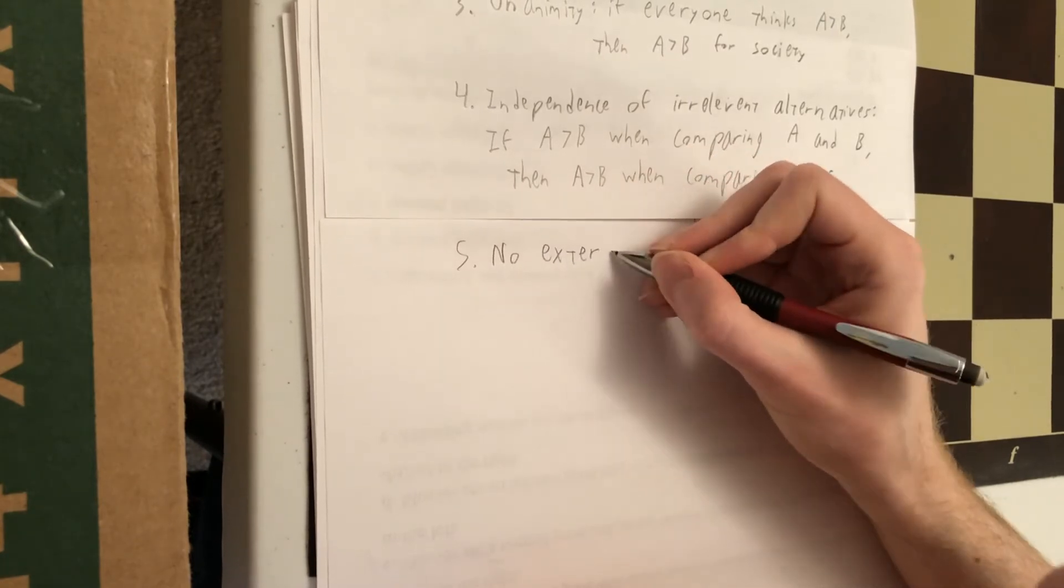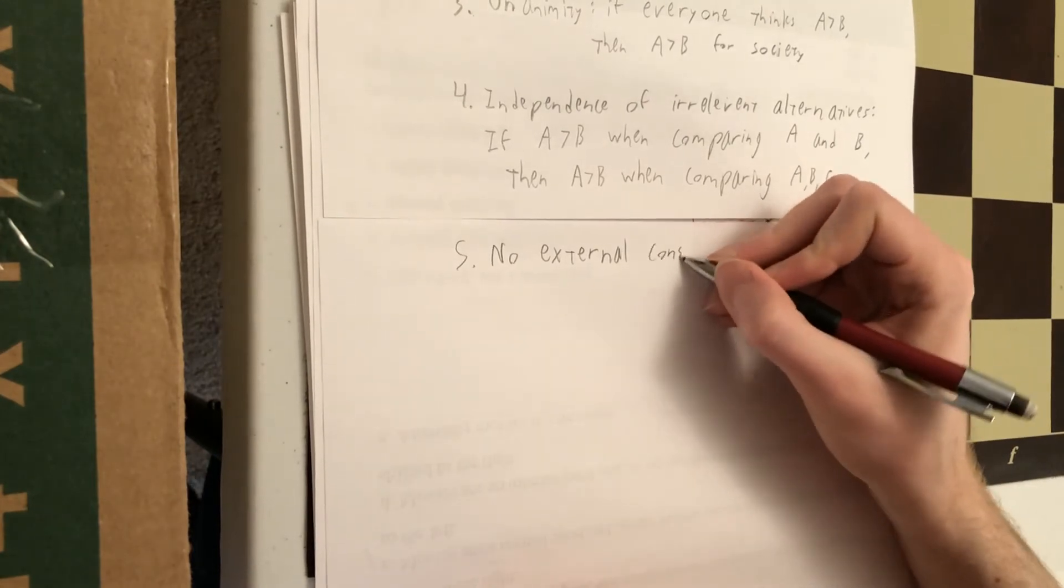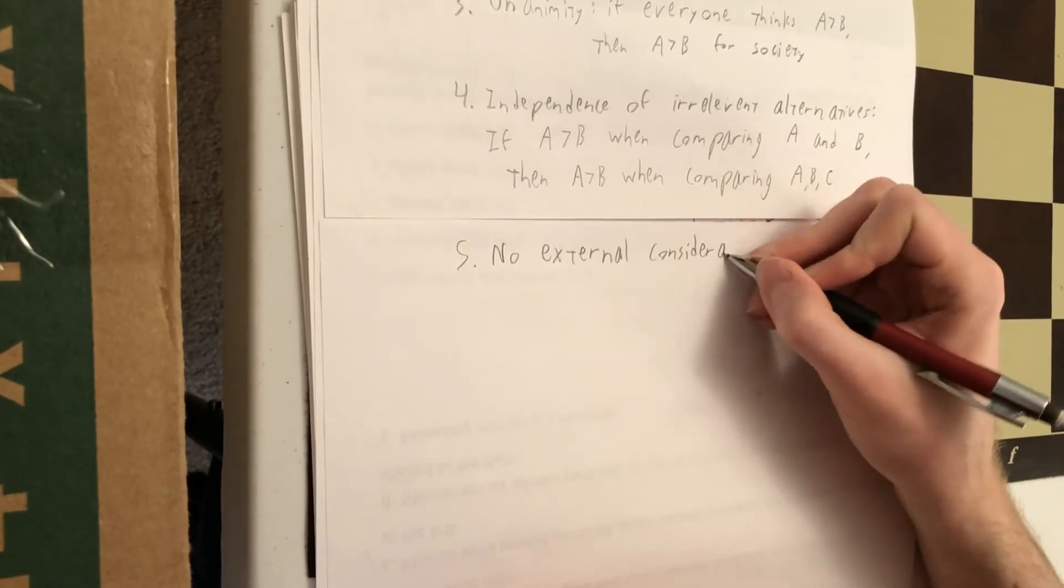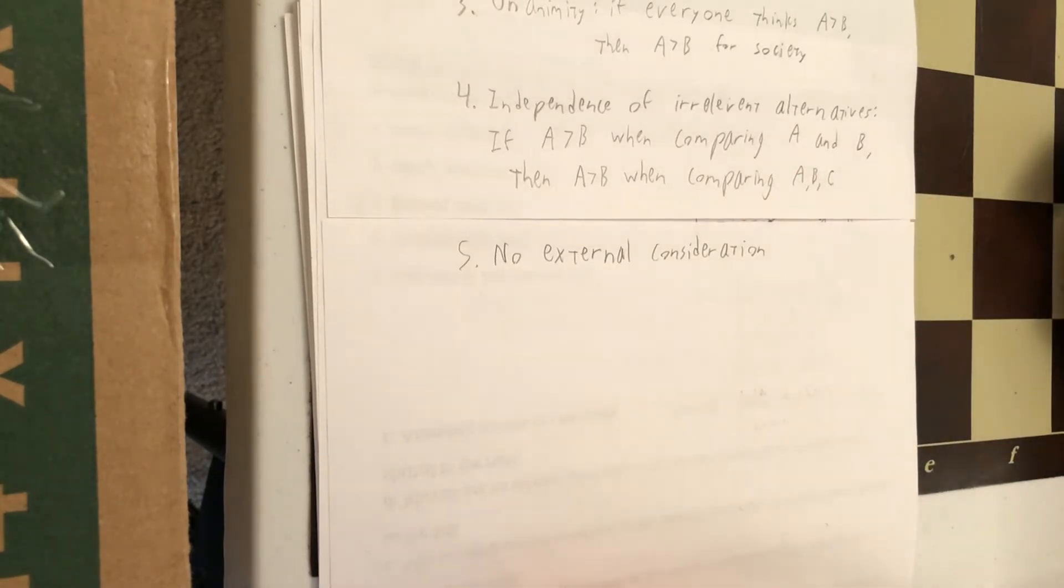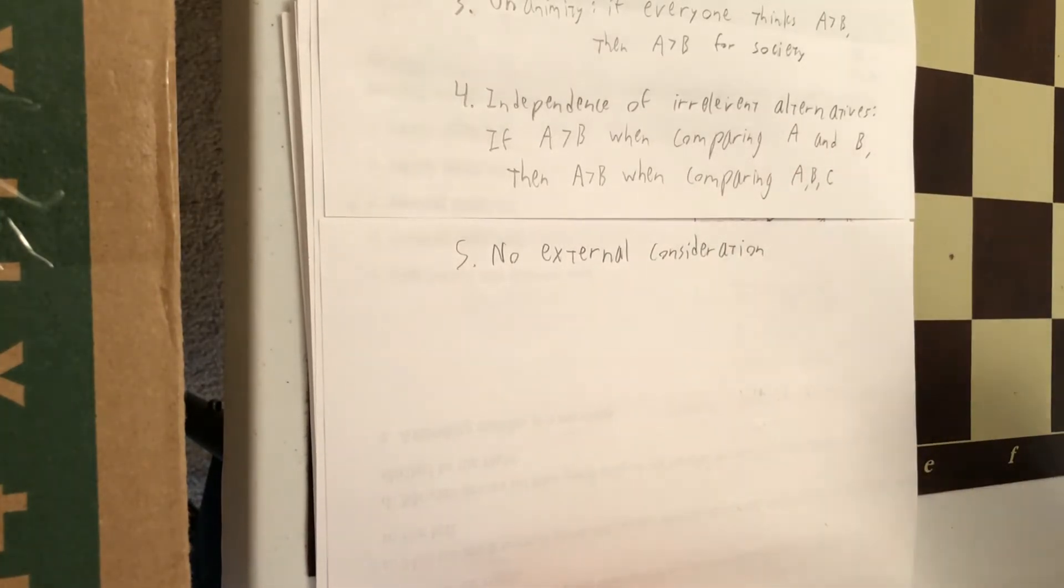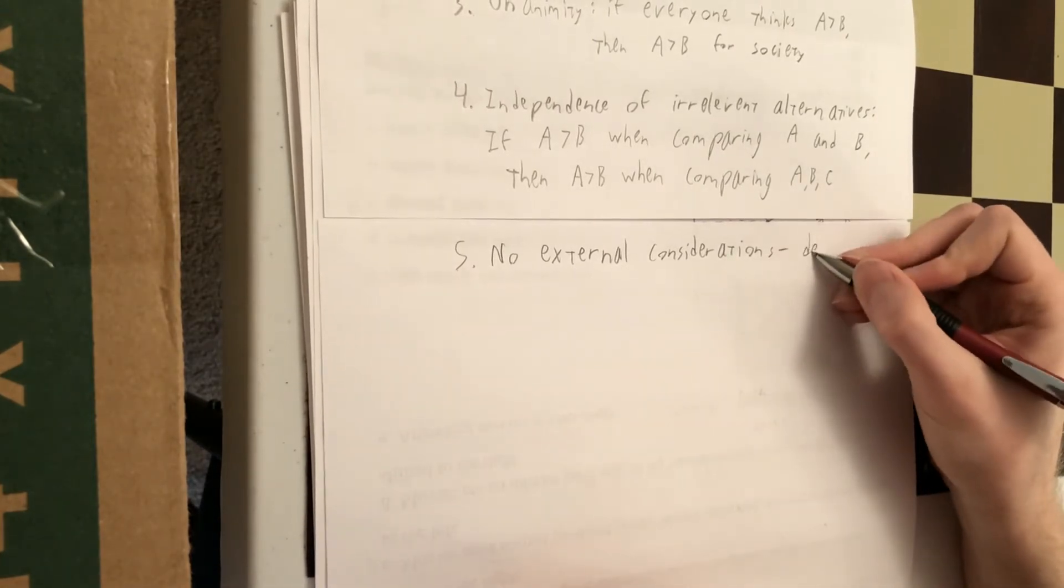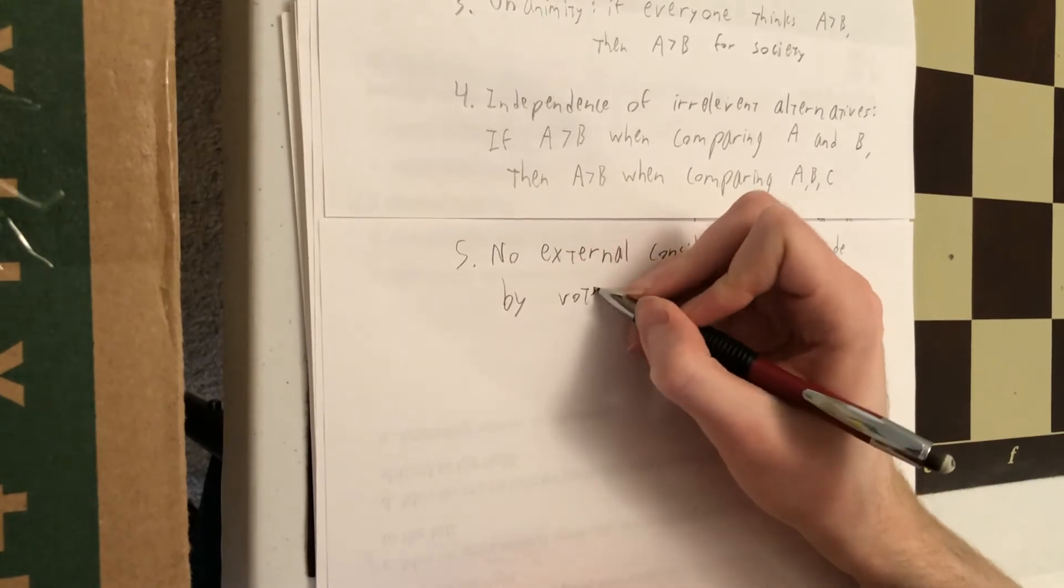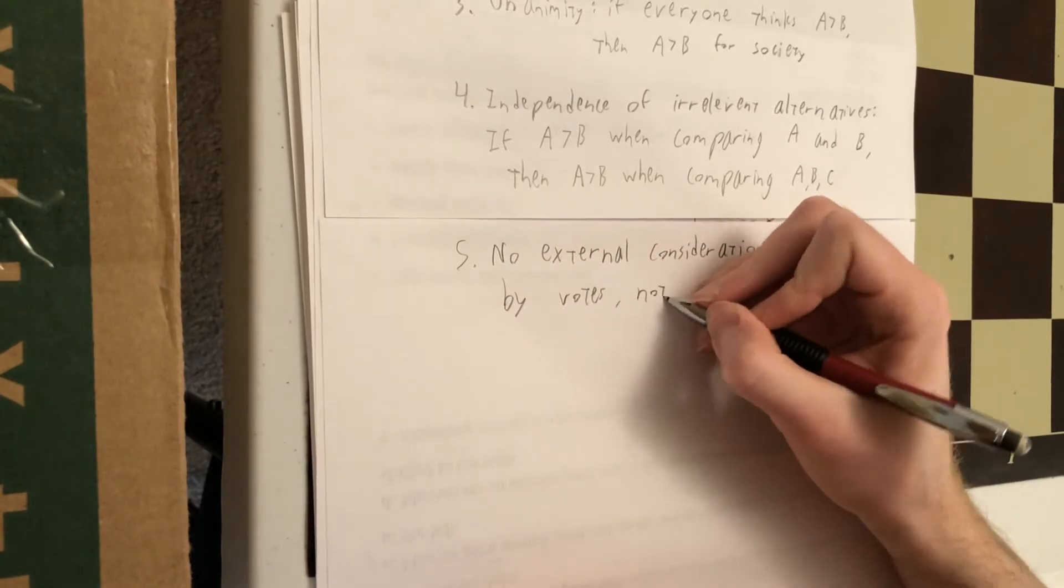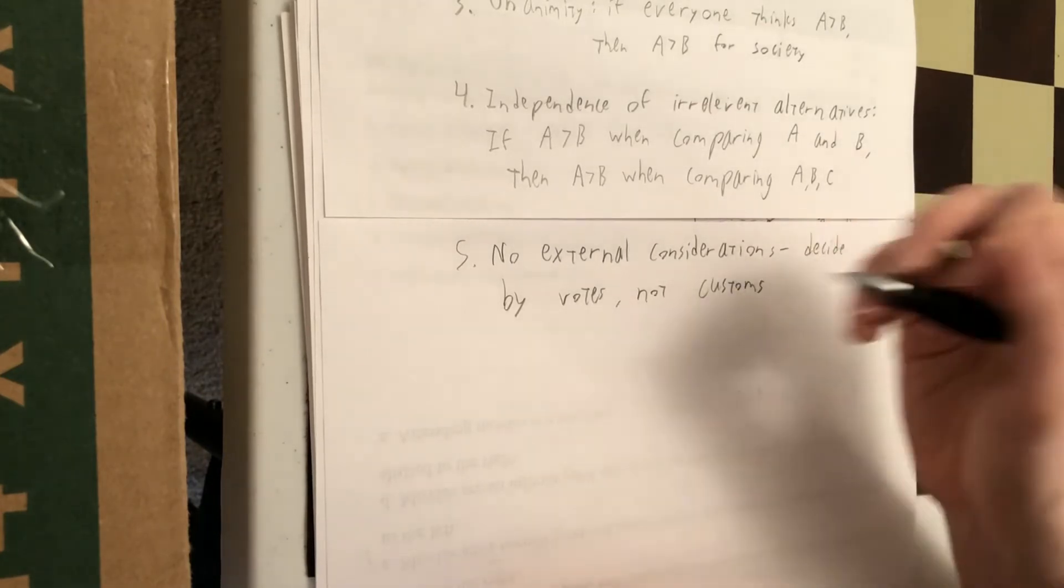Requirement number five, your book talks about no external considerations. The democracy is dependent only on votes, not things like traditions or customs based on what actual people think is revealed in their votes. If you support democracy, then number five seems very reasonable.